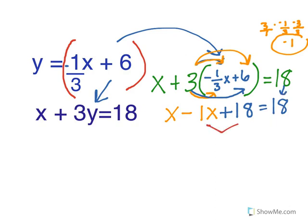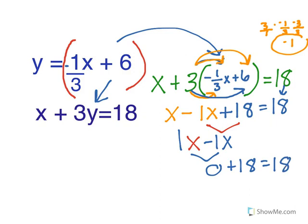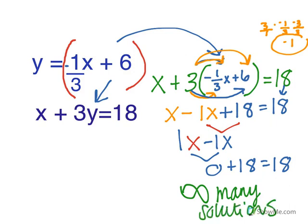Now we combine like terms. x minus x — having just a regular x is the same as 1x, so 1x minus 1x gives you 0. You're left with no variable and the fact that 18 equals 18. This is a true statement, so this tells me it's going to be infinitely many solutions. When your variables cancel out with a true statement, it's going to be infinitely many solutions.